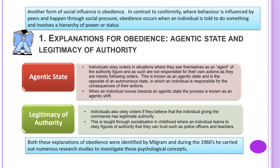The first explanation for obedience is the agentic state. Here, an individual obeys orders in situations where they see themselves as an agent of the authority figure, and as such are not responsible for their own actions, as they are merely following orders. This is known as an agentic state and is the opposite of an autonomous state, in which an individual is responsible for the consequences of their actions. When an individual moves towards an agentic state, the process is known as an agentic shift.